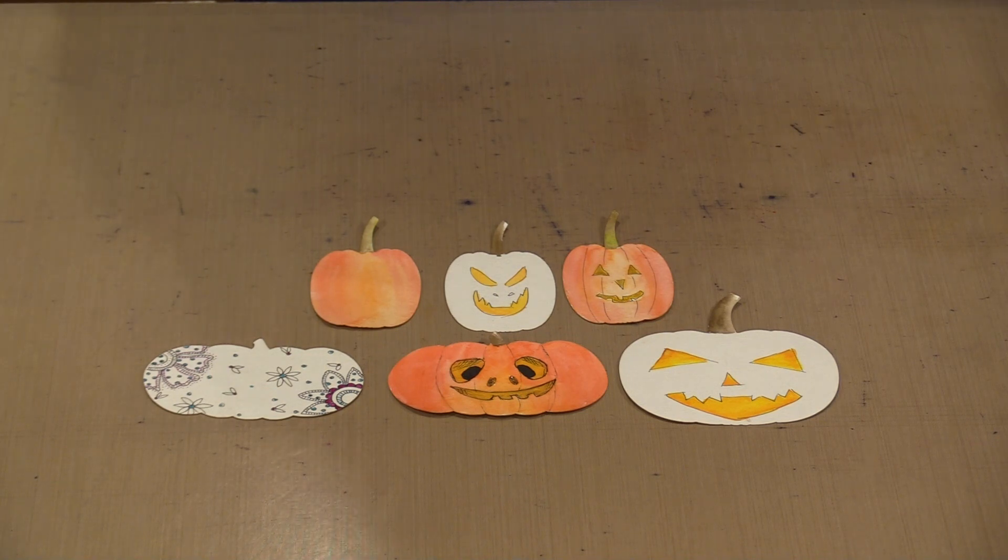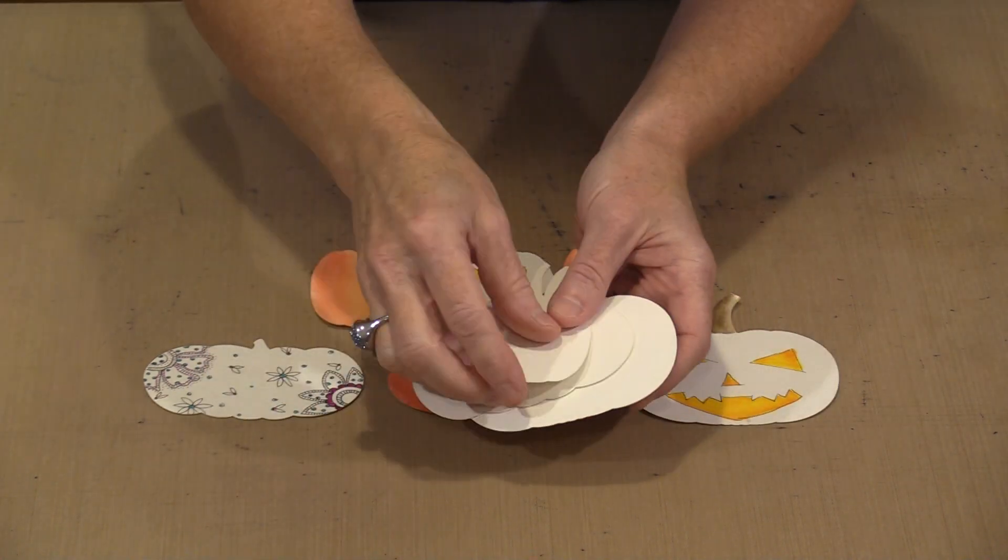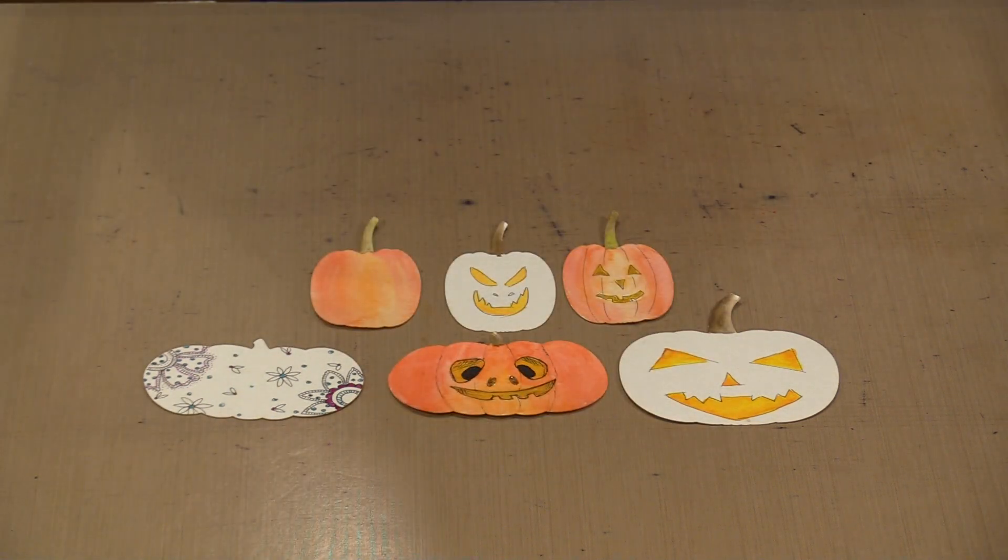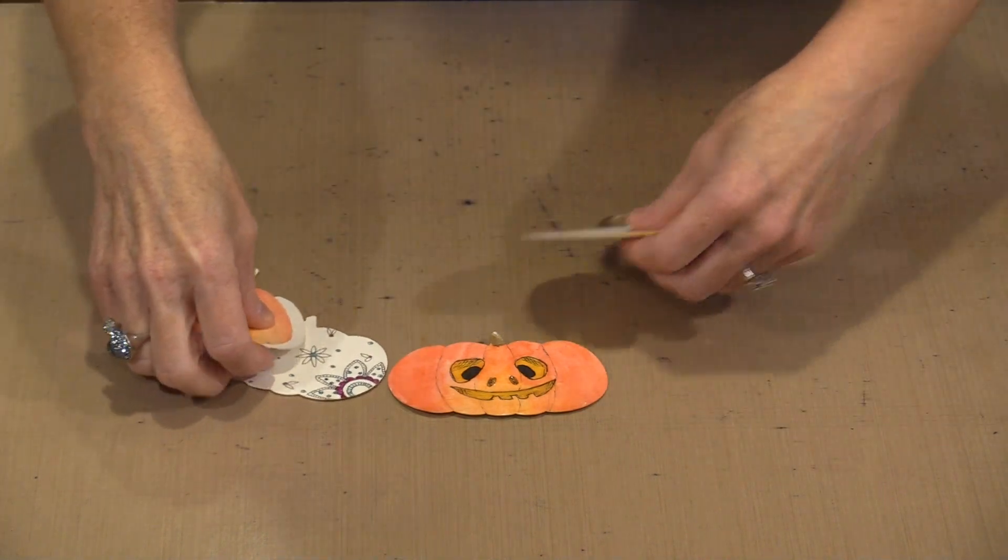These pumpkins are our current freebie. If you spend $25 in products, excluding gift certificates, we'll give you a set that includes five each of the three shapes. We'll give you 15 pumpkins. You don't have to do anything. The warehouse will automatically include them.